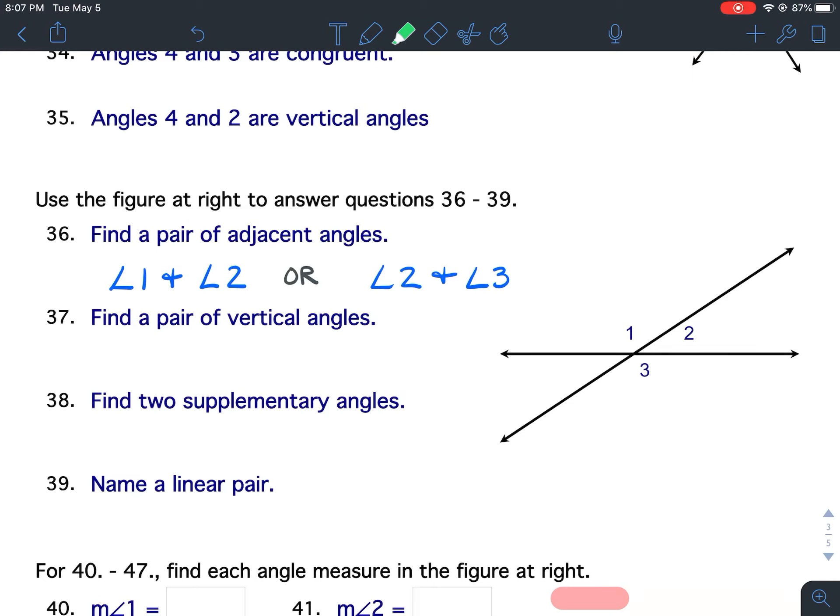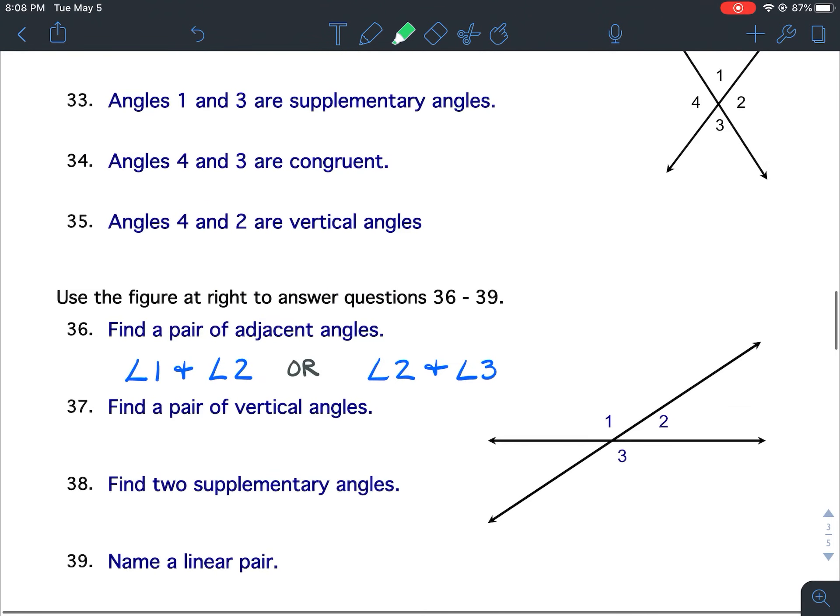And for 39, you're going to name a linear pair. So you're on your own for those. You can always look at your notes to help you if you need to. If you have any questions, let me know on questions 32 through 39.